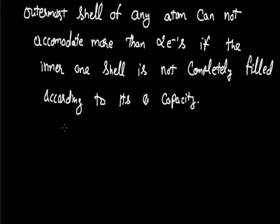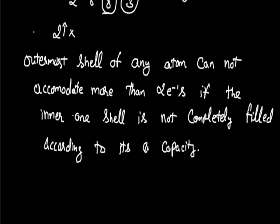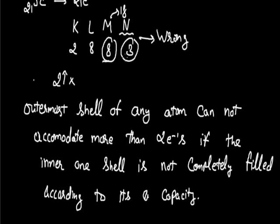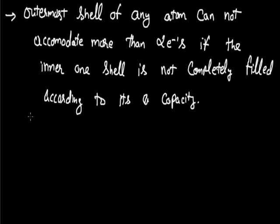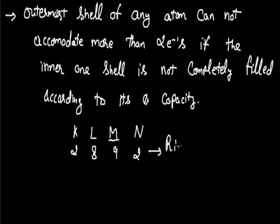According to this rule, in the case of potassium, giving 3 electrons to the outermost shell while the inner M shell is not complete is incorrect. So for scandium, the configuration is K2, L8, and N shell stays constant at 2 electrons. The remaining electrons go back to fill M shell. So M shell gets 9 electrons total, and the correct configuration for scandium is K2, L8, M9, N2.